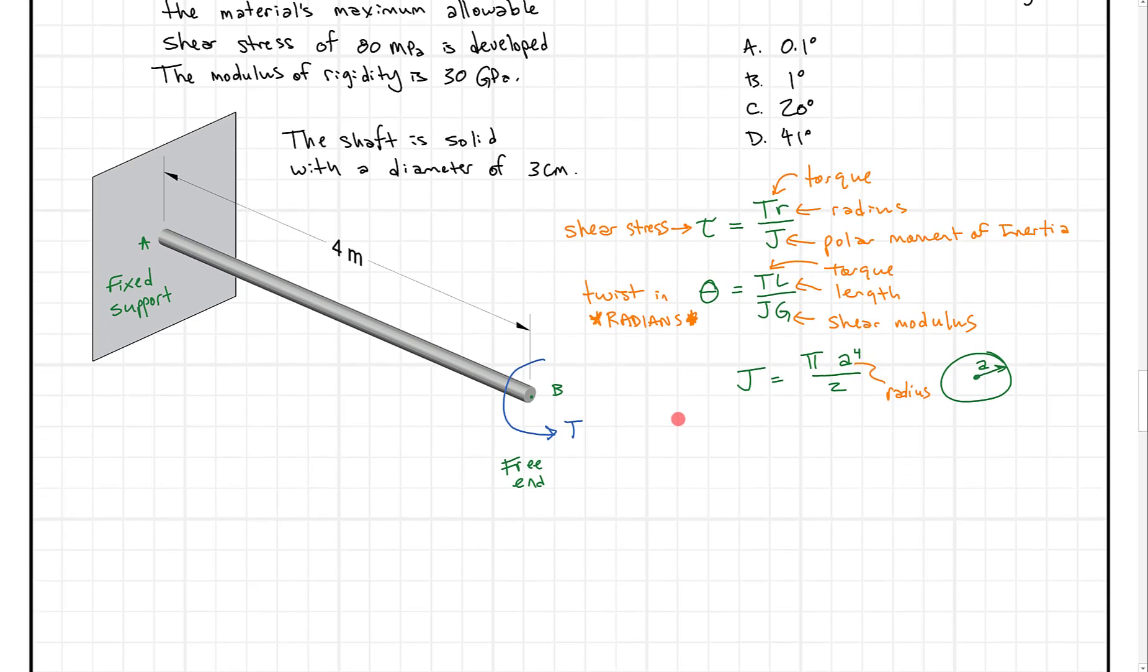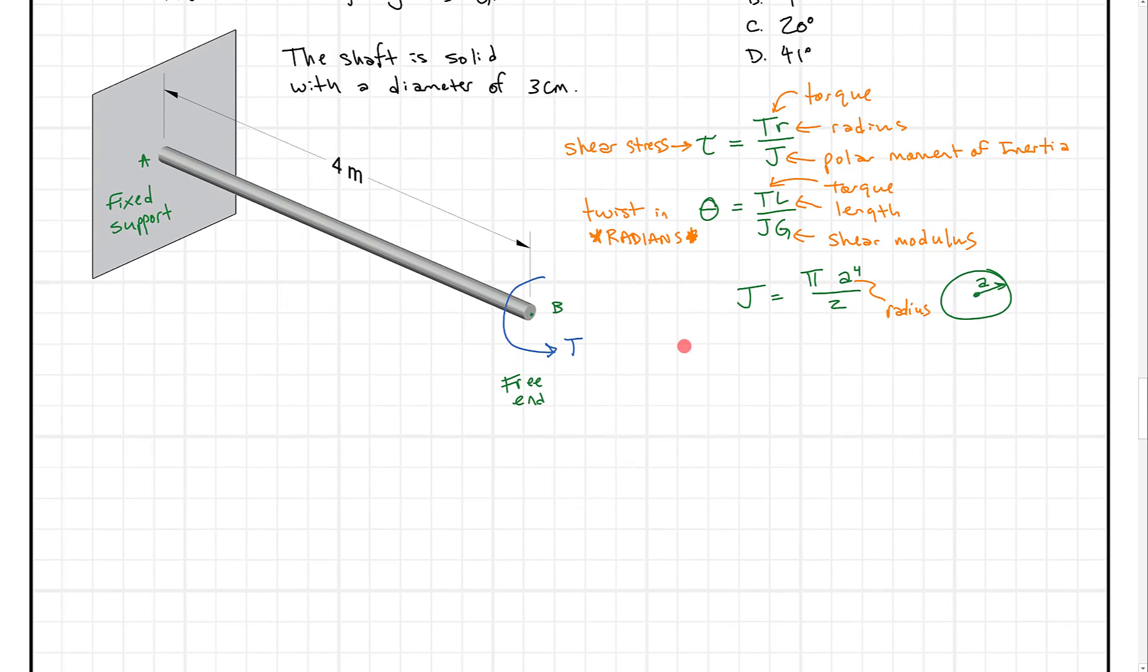So first let's go and solve this equation to solve for T. So I'm going to make a little bit of room here and what we'll say is T, if we multiply both sides by J divided by R, is going to equal tau times J divided by R. So we probably first find J so let's go through that just for the fun of it.